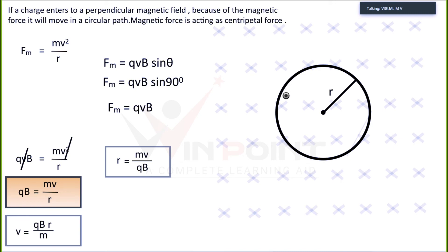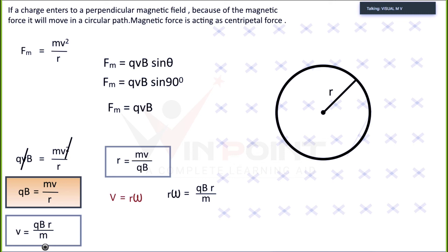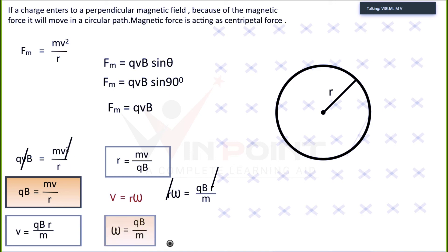Since there is rotation, there will be an angular velocity — both linear velocity and angular velocity. Using the relation V = Rω, we substitute V = QBR/M: Rω = QBR/M. The R values cancel, giving ω = QB/M.